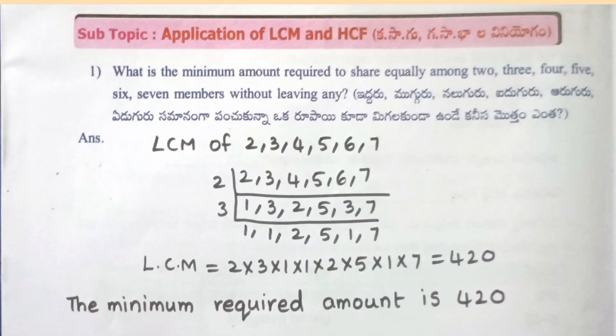Worksheet 23: What is the minimum amount required to share equally among 2, 3, 4, 5, 6, 7 members without leaving any remainder? LCM of 2, 3, 4, 5, 6, 7 = 2×3×1×1×2×2×5×1×7 = 420. The minimum required amount is 420.